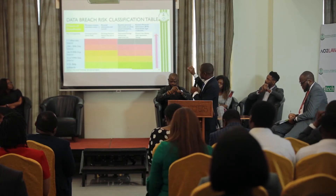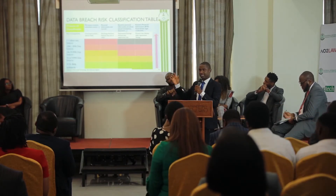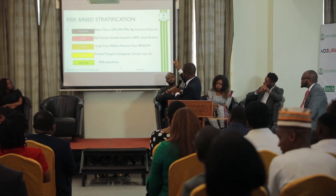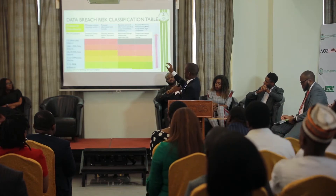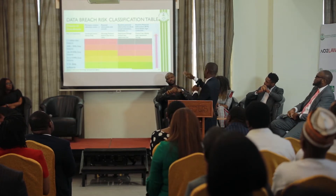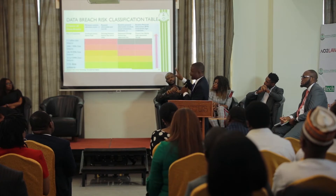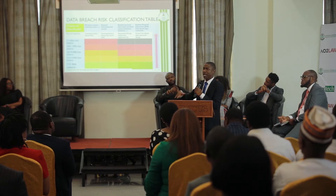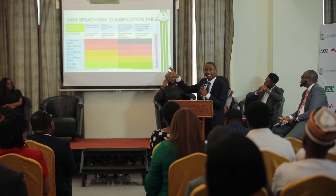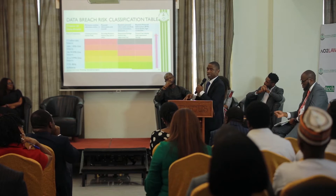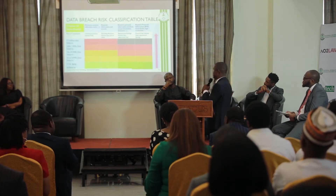Data breach risk classification table. There are different classes of data. We have personally identifiable information, which includes your name, contact, education, career, and all that. Then we have financial information and records. Then we have sensitive personal information — medical, your sexual orientation — and biometric data. Then we have sensitive financial information, including your BVN, your card details, login credentials, and all that.